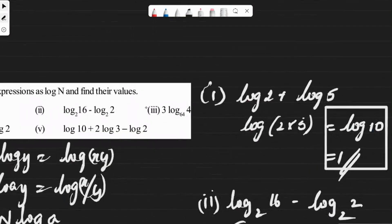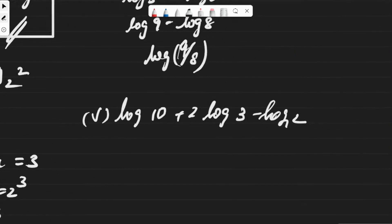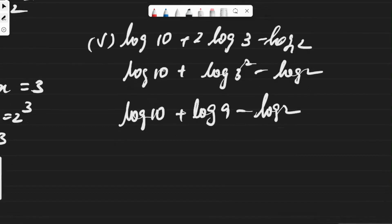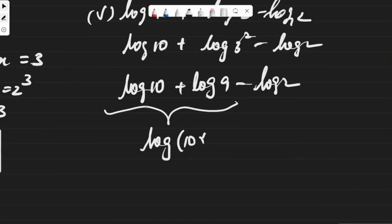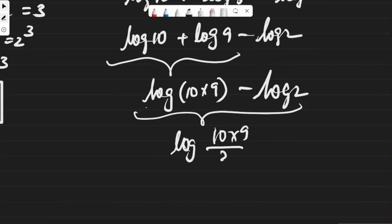The fifth question: log 10 plus 2 log 3 minus log 2. The middle term 2 log 3 becomes log(3 squared), which is log 9. So we have log 10 plus log 9 minus log 2. Following DMAS rule, add first then subtract: log 10 plus log 9 equals log(10 times 9) equals log 90. Then log 90 minus log 2 equals log(90/2), which equals log 45.